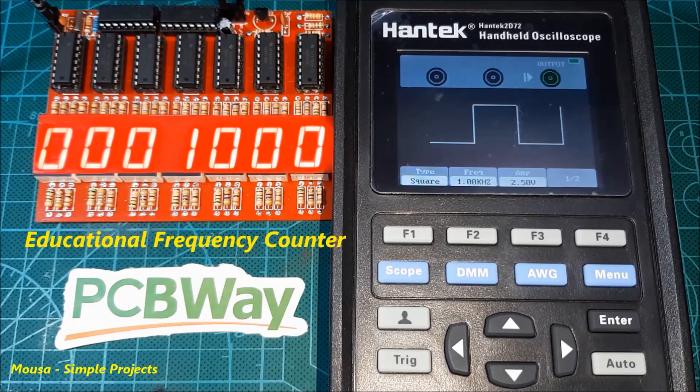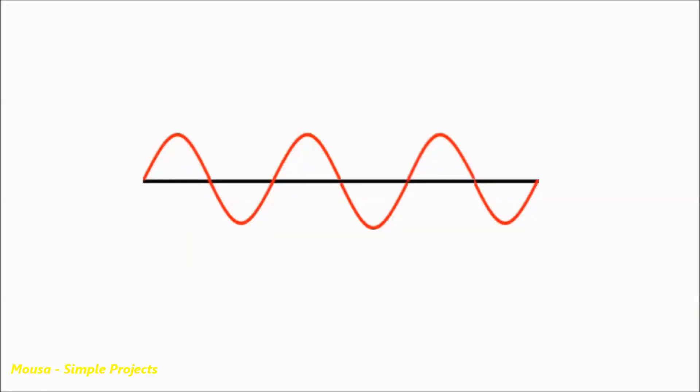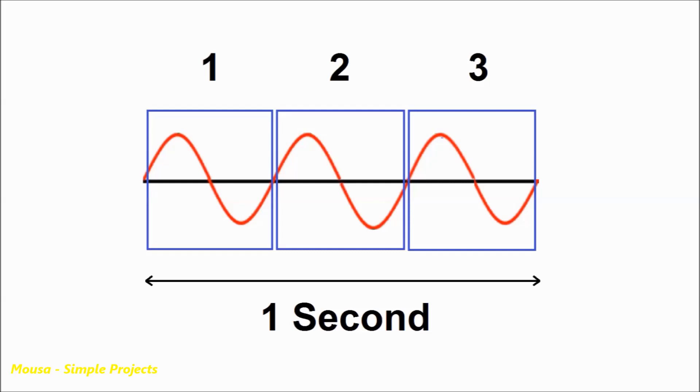First of all, let's see what is frequency. The frequency refers to the number of cycles in one second. For example, here we have three cycles in one second, so the frequency here is equal to three hertz.